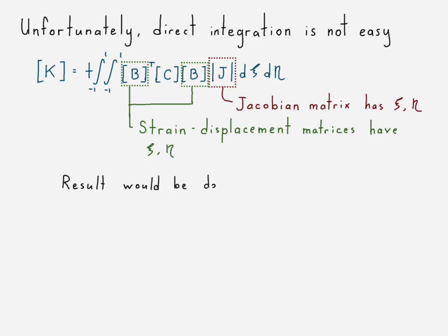And so the result is we have this double integration of an 8 by 8 matrix. Remember, it's four nodes with 2 degrees of freedom each, x and y direction at each node. So 8 by 8 stiffness matrix. And that would be composed of cubic polynomials. That's going to be a lot.